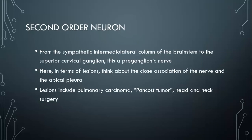The second-order neuron is the preganglionic neuron of this sympathetic innervation, traveling from the intermediolateral column of the spinal cord to the superior cervical ganglion. The key anatomical consideration is that it travels in close proximity to the apical pleura, so pulmonary disease can cause lesions here — things like pulmonary carcinoma (a Pancoast tumor), as well as head and neck surgery.